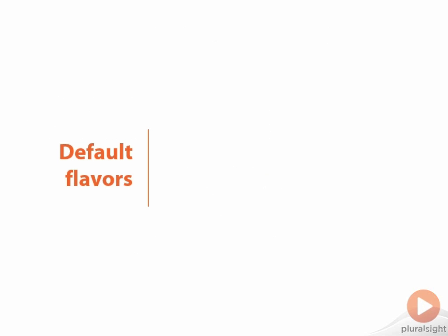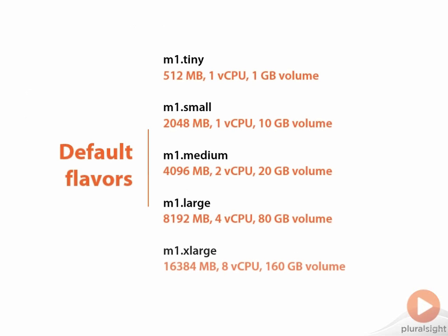When we talk about flavors it's not quite like Baskin-Robbins. There are only five default flavors, though you could have 31 if you desired, but it's unlikely your business will have a use case for all of them. As you can see, these match up to common AWS sizing as well. We often refer to tiny, small, large, or extra large, and they're all relative to each other. There's no industry standard or ISO standard, but these are the sizes you're going to see in an OpenStack environment.